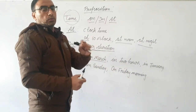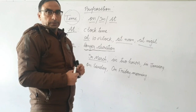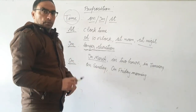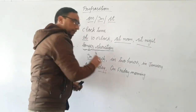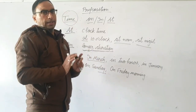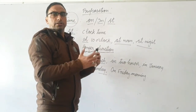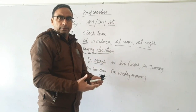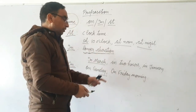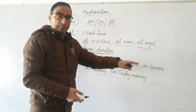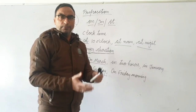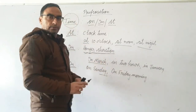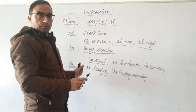Then comes 'on'. Wherever you find a day, we write 'on' — such as on Sunday, on Republic Day, on Independence Day, on Friday morning, on Saturday evening. When there is a specific day, we use 'on'.